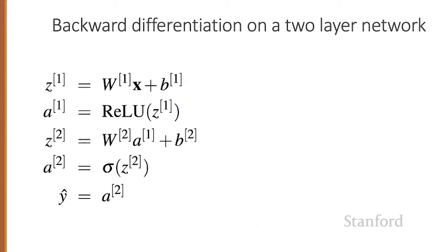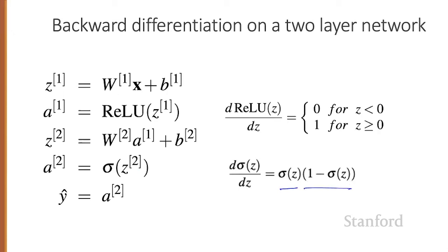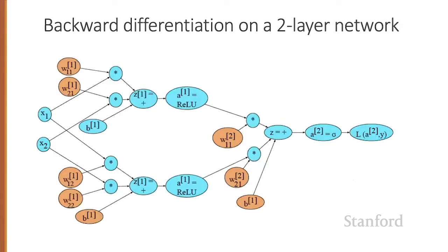In order to do the backward pass on this computation graph, we'll need to know the derivatives of all the functions in the graph. We've seen the derivative of the sigmoid: the derivative of sigma of Z is sigma of Z times one minus sigma of Z. And we know the derivative of the ReLU. Here's the entire computation graph, with the weights that need updating — those for which we need the partial derivative of the loss function — shown in orange.